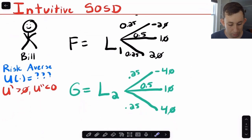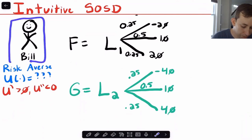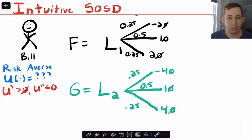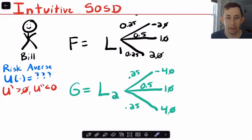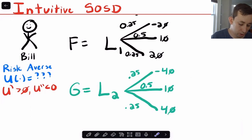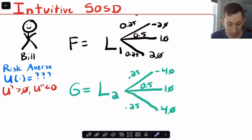For an intuitive example, we're going to start with Bill. Now Bill is risk averse — he's got some utility function. I'm not going to give him a specific utility function, because the point of second order stochastic dominance is we want to determine which lottery any risk averse utility maximizer would pick over another. It's not going to be dependent on a specific utility function. Being risk averse just means you have an increasing and concave utility function.